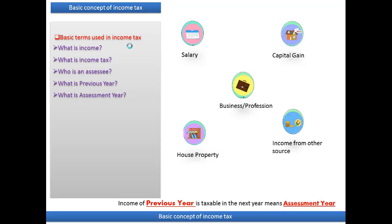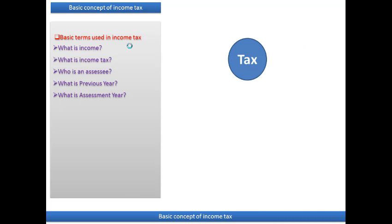On this income we calculate the tax. Now, what is income tax? When our income exceeds the defined limit — for example, if the yearly salary limit defined in income tax is 2.5 lakh rupees and your income goes up to five lakh rupees, then we have to pay 5% tax on that. So when the income exceeds the limit on any of these heads, we have to pay tax.